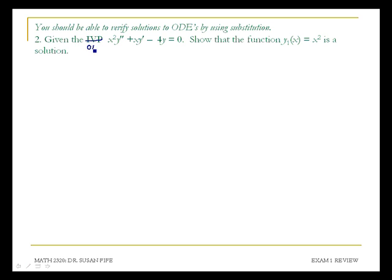Given the ordinary differential equation, x squared y double prime plus xy prime minus 4y is equal to 0, show that the function y1 of x equals x squared is a solution.